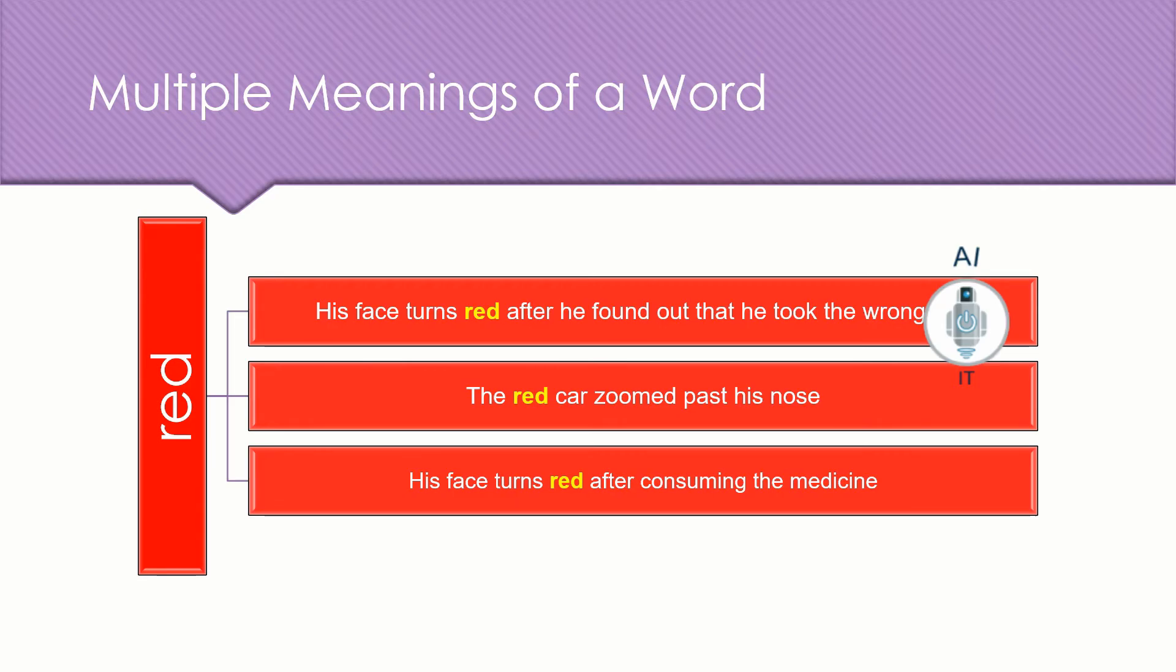Let us look into the third example. His face turns red after consuming the medicine. Is he having an allergic reaction? Or is he not able to bear the taste of the medicine? So we are looking into the context here. Now, the context may vary depending on what we are talking about in that particular statement. Or if we look into the entire paragraph, we may get the right meaning for this particular sentence and word. So the difficulty with language also goes with multiple meanings of words.